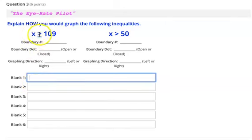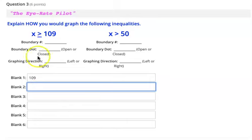So first of all, x is greater than or equal to 109. What's the boundary point? The boundary number is 109. So that's where you would start your graph at 109. The boundary dot, what would you do for the boundary dot? Well, it's an equal to, so it would be a closed dot or also known as a solid dot.